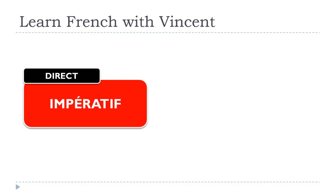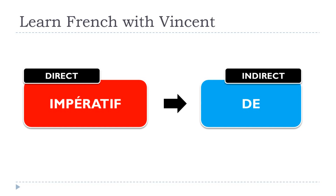Obviously it won't be possible to transpose the imperative into the same form. So we'll see how to do it — basically, when you transpose from direct to indirect, in that case you'll have to introduce the preposition DE. After that, the rest may change slightly. This is what we are about to discover.